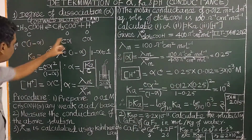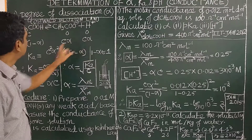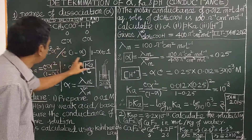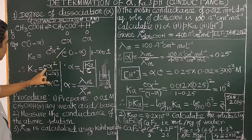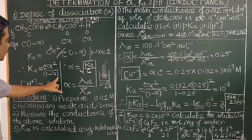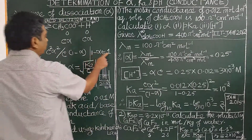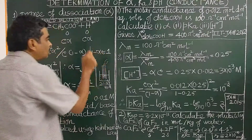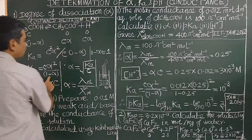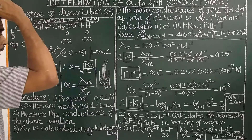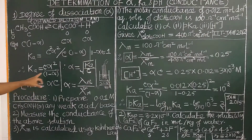By applying the law of mass action, Ka equals the concentration of products divided by concentration of reactants. This gives Ka = Cα² / (1 − α). If alpha is very small (α << 1), we can assume 1 − α ≈ 1, simplifying the expression.